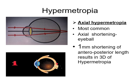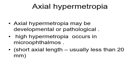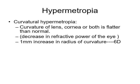A hypermetropic eye is small; a myopic eye is longer in axial length. Axial hypermetropia may be developmental or pathological. High hypermetropia occurs in microphthalmos with short axial length — generally less than 20 mm. In curvature hypermetropia, the curvature of the lens, cornea, or both is flatter than normal. When curvature is flatter, light focuses behind the retina; if curvature is more, light focuses in front of the retina. 1 mm increase in radius of curvature causes 6 diopters of hypermetropia.